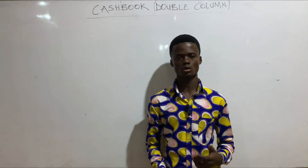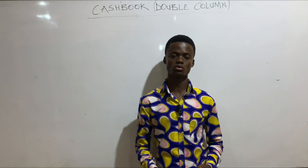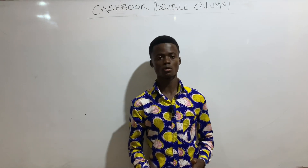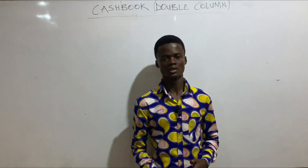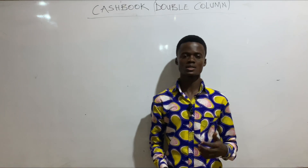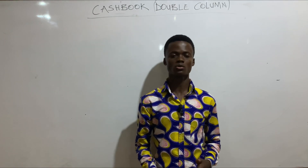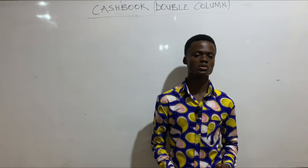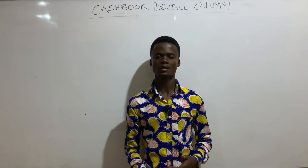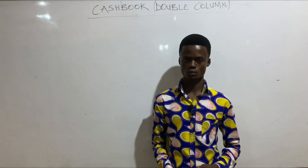The two column or the double column cashbook is a cashbook that has two separate columns for amounts on both sides. Thus, on the debit side or on the receipt side, it has two separate columns for amounts, and on the credit side or on the payment side, it also has two columns for amounts.